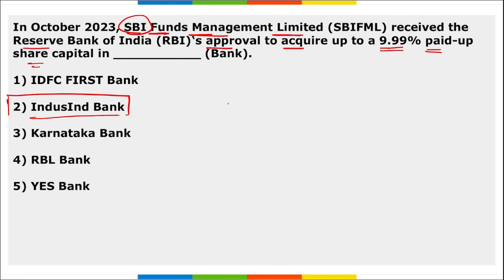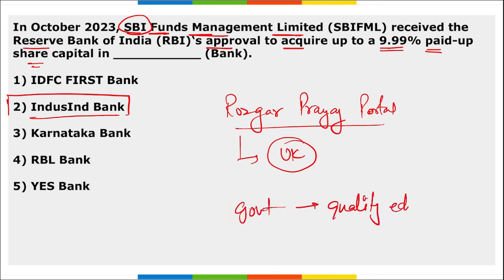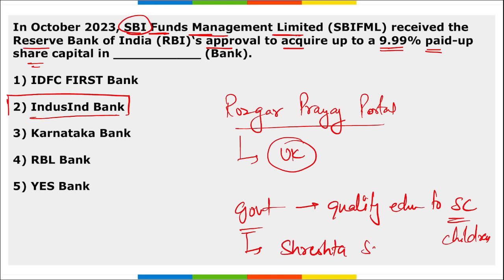Uttarakhand launched the Rojgar Prayag Portal during the Uttarakhand Youth Mahotsav — launched by the Chief Minister of Uttarakhand. The Shrestha scheme was launched by the government to provide quality education to Scheduled Caste children.